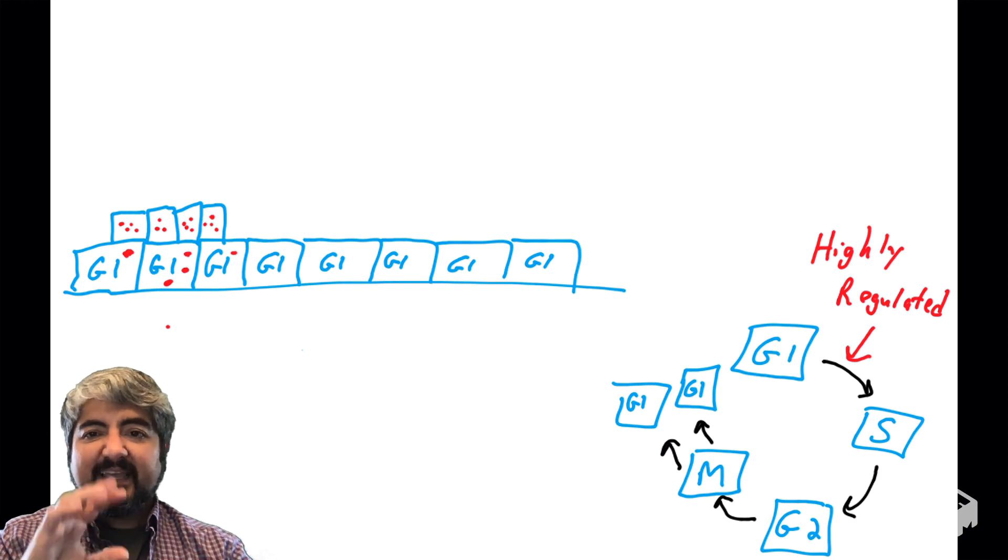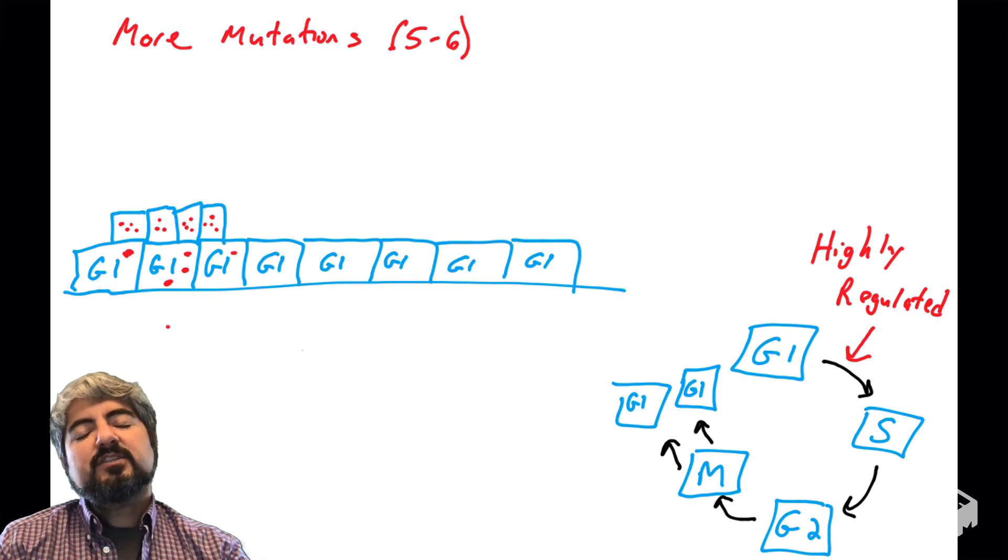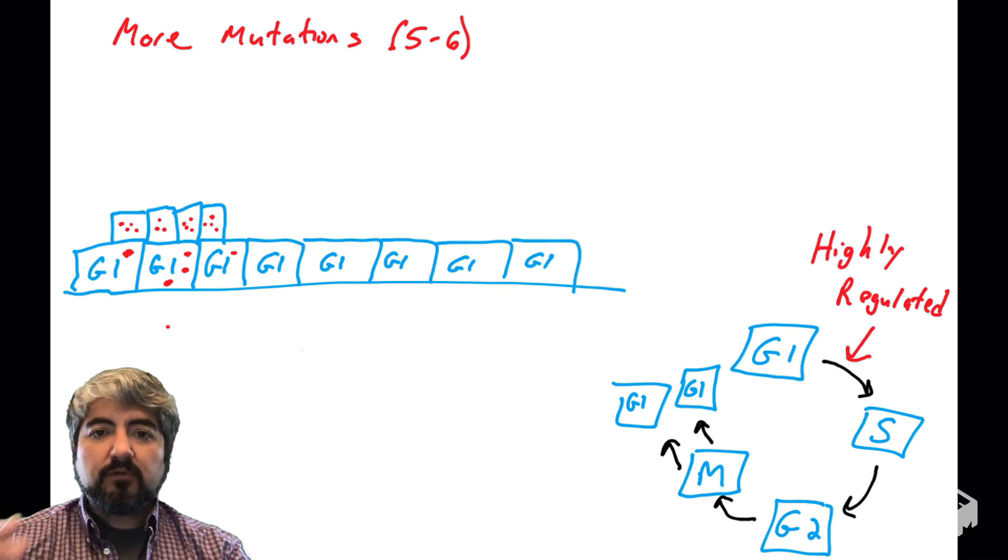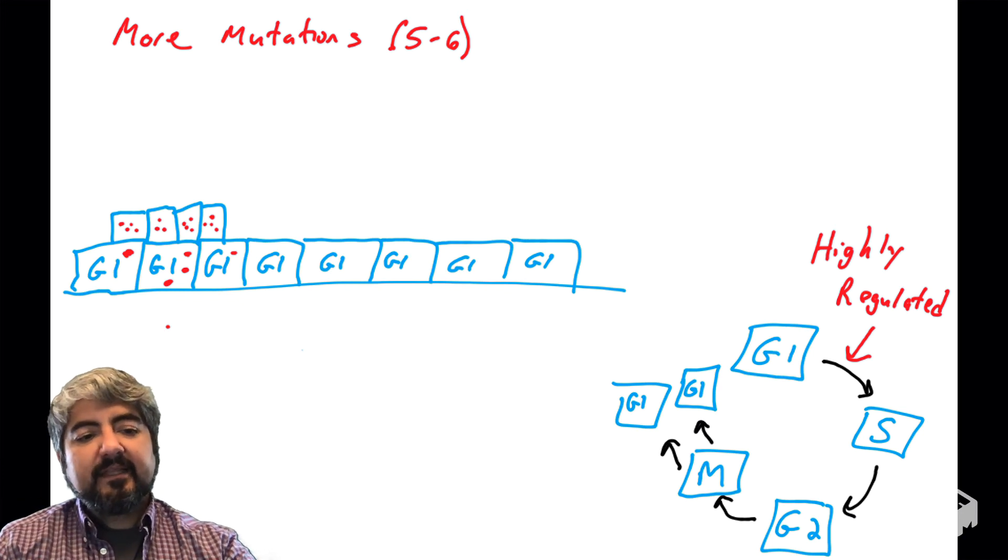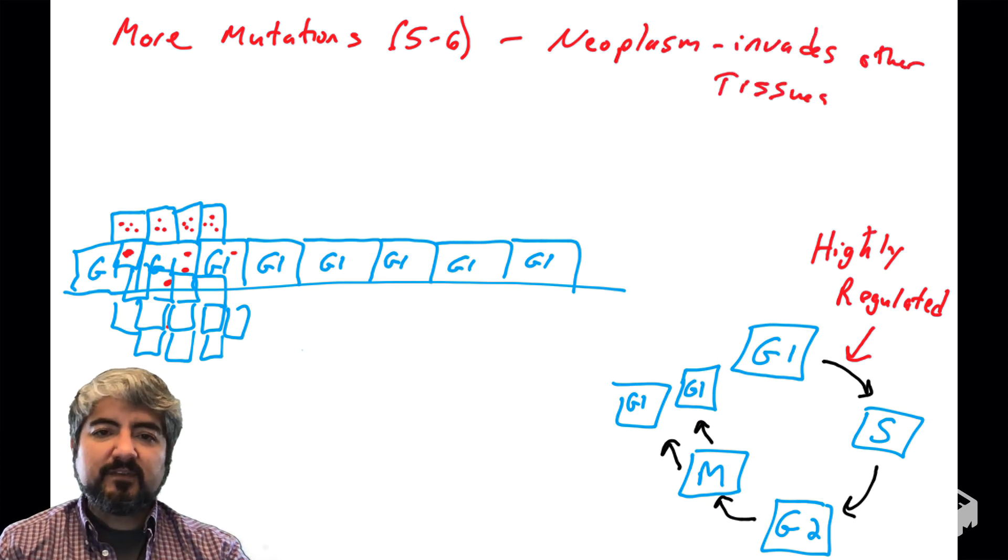Well, let's say in that group of cells, we have some more mutations occurring, about five to six mutations are thought to need to occur in key regulatory genes that control growth and apoptosis. And if that occurs in that group of genes, now you have really unregulated growth and division.